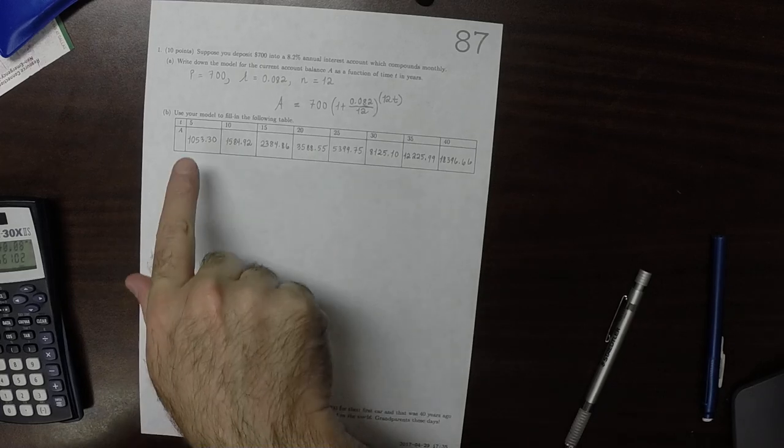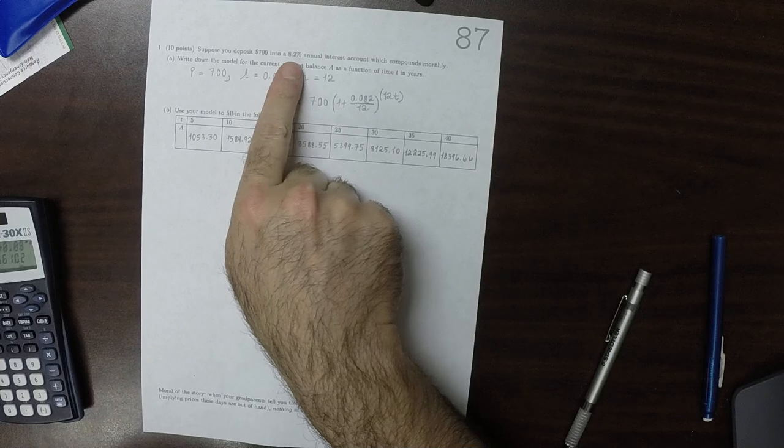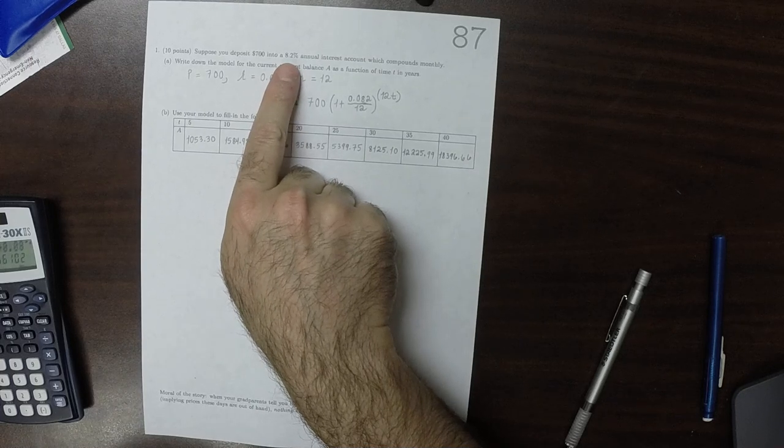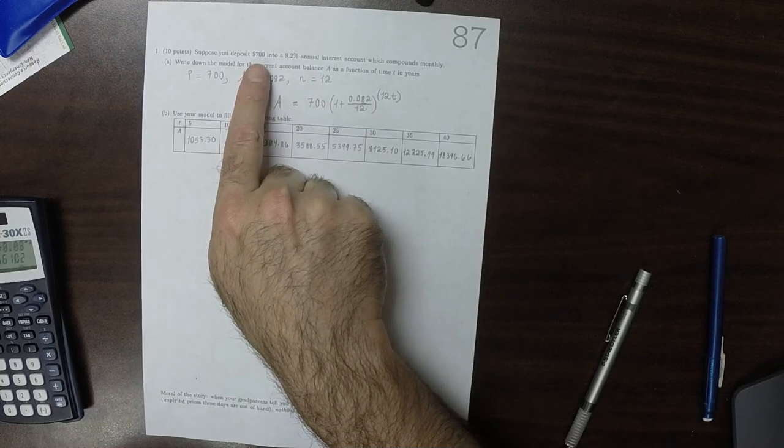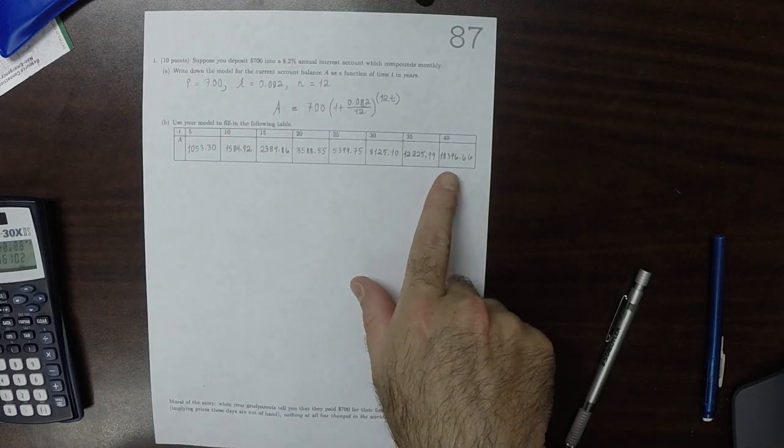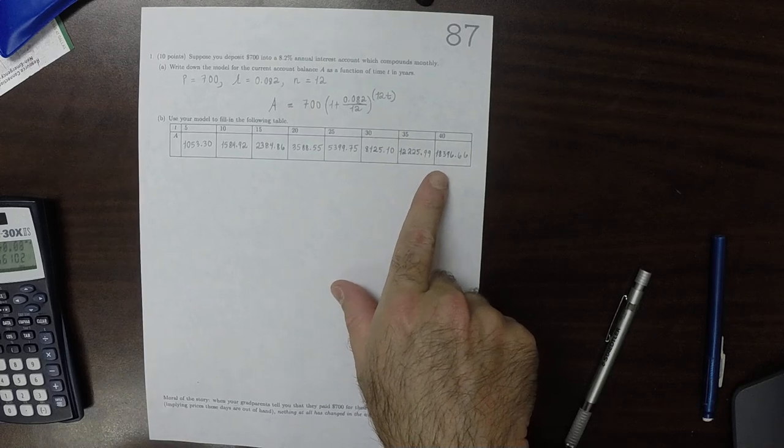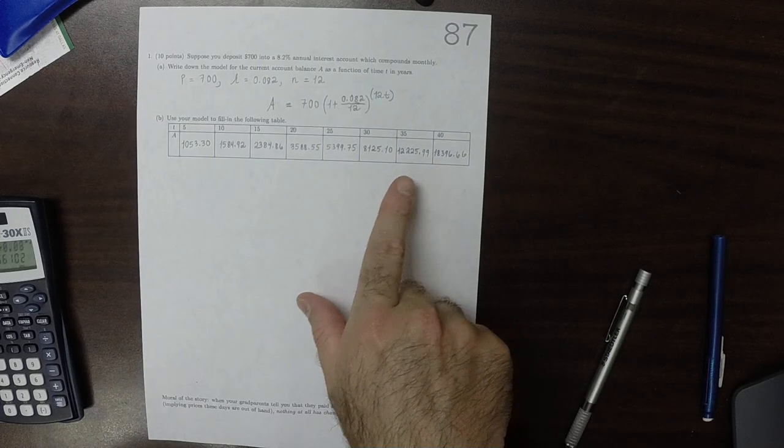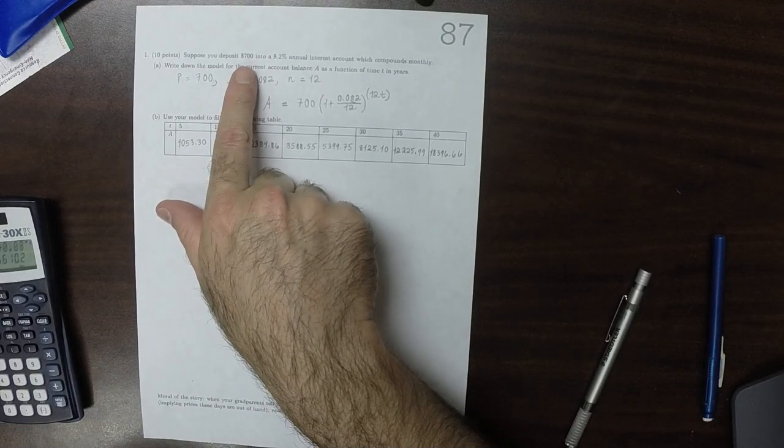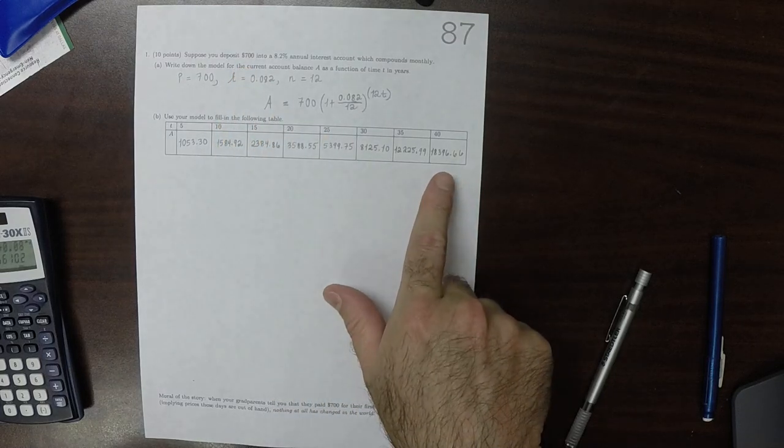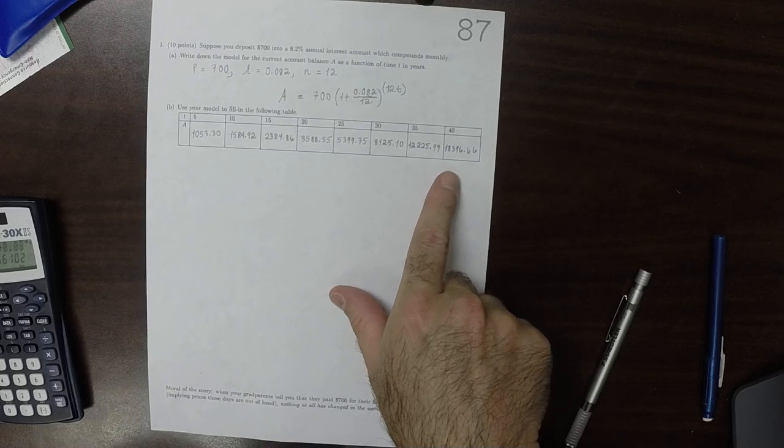So what that's saying is that over the course of 40 years, with more or less standard interest for such a long period of time, 700 becomes 18,000. So when one of your relatives says, back when I was your age, I only had to pay $700 for my first car, well okay fine, I only had to pay $18,000 for my first car, and there's really no actual difference.